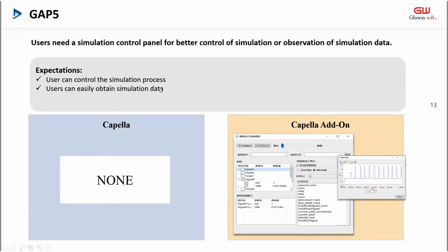Gap 5: users need a simulation control panel for better control of simulation or observation of simulation data. The user expectations are: users can control the simulation process and can easily obtain simulation data. We believe that readability, controllability, and data recordability of the model simulation process are very important.